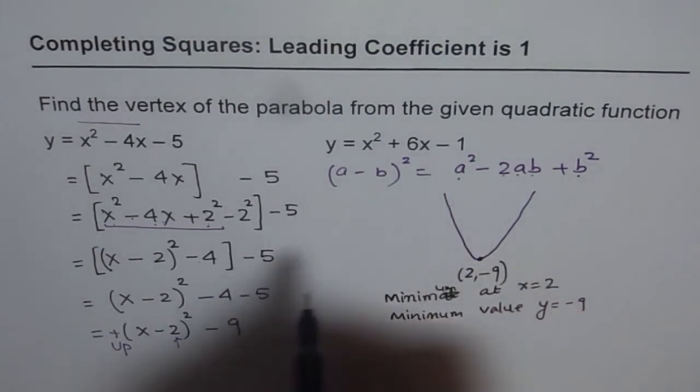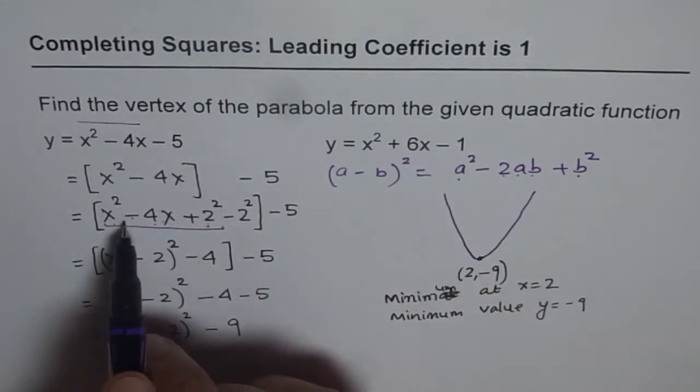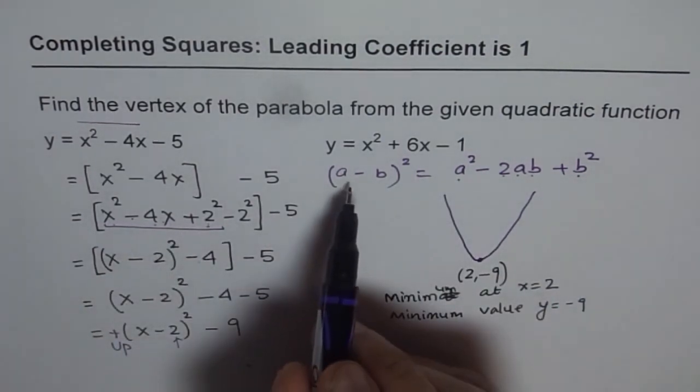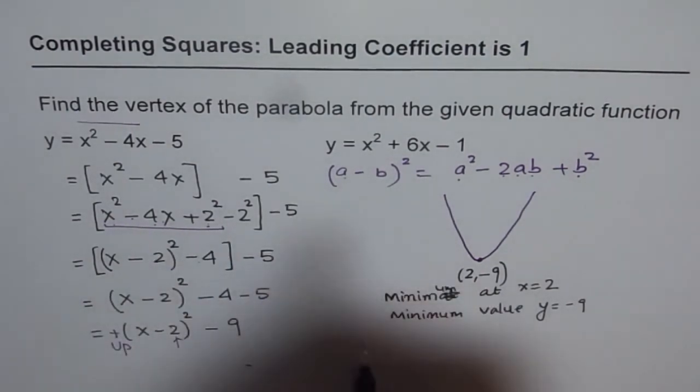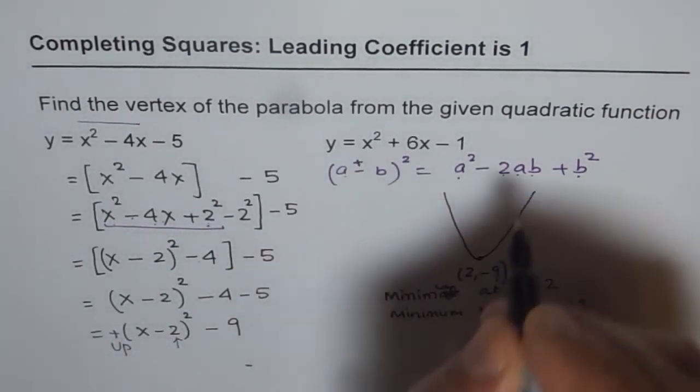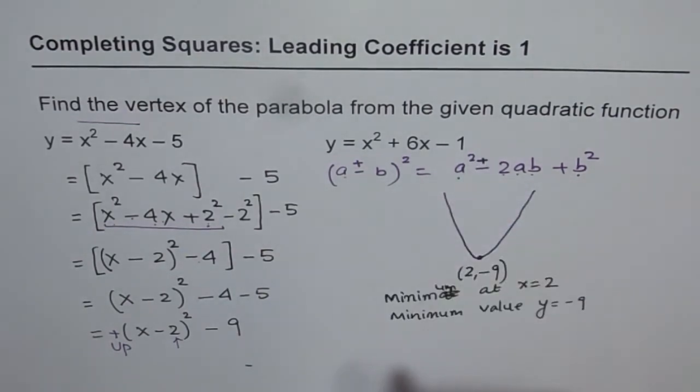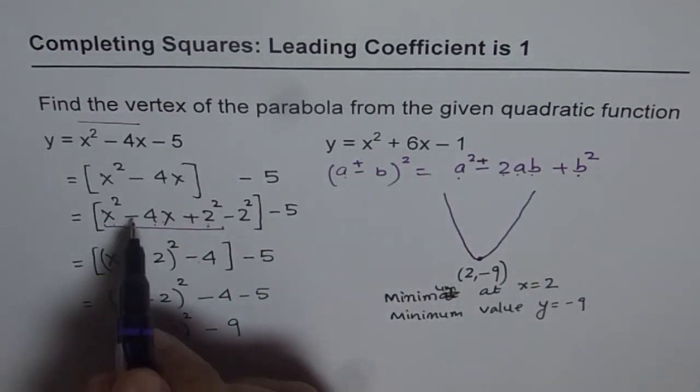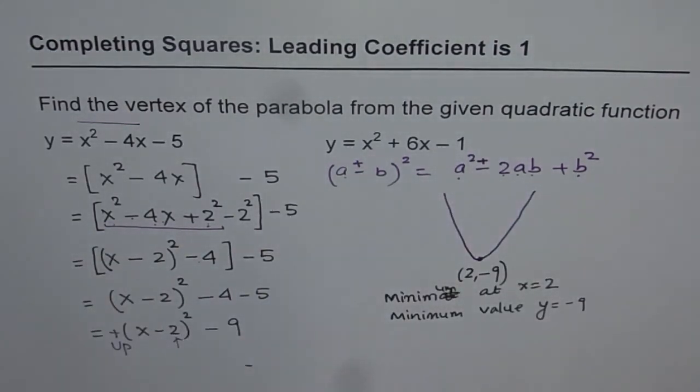And then, we wrote these three terms as a perfect square, a minus b. In case this was plus, only difference will be here you will have a plus sign. In this case, since it was minus, we got minus. I hope that makes the things absolutely clear.